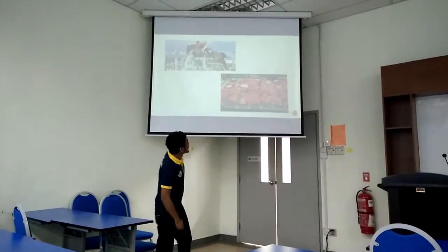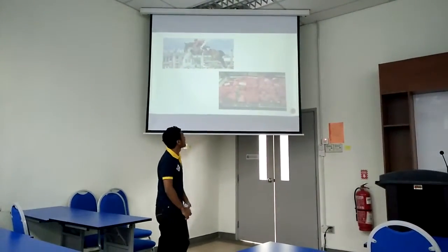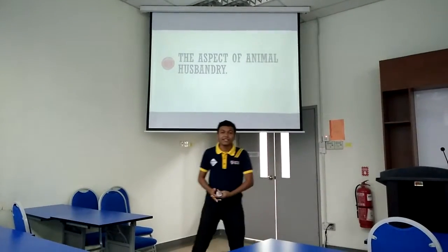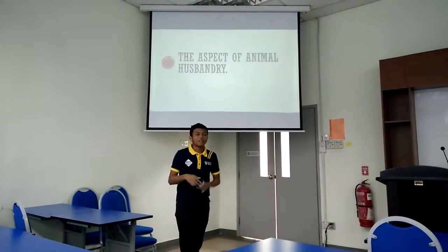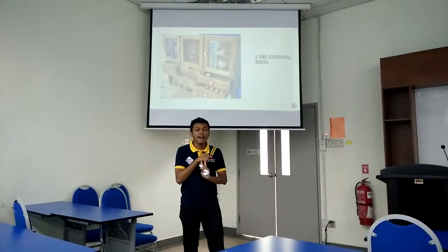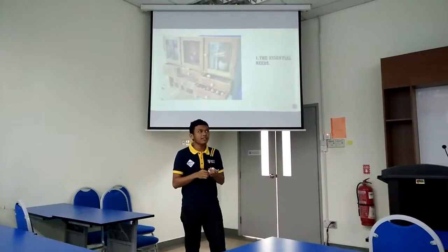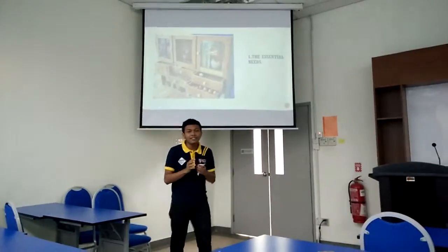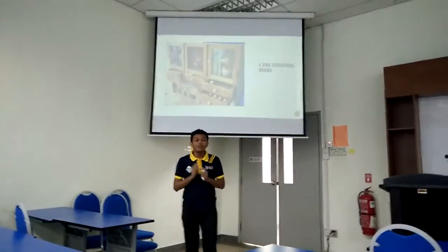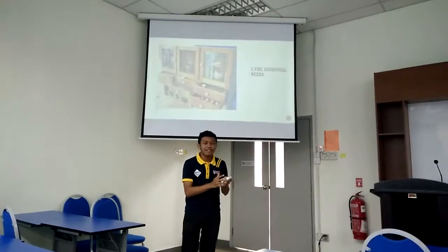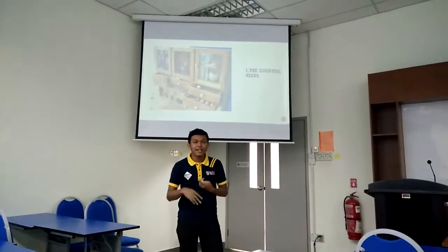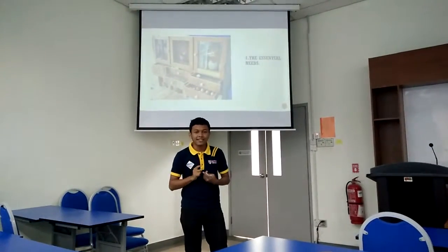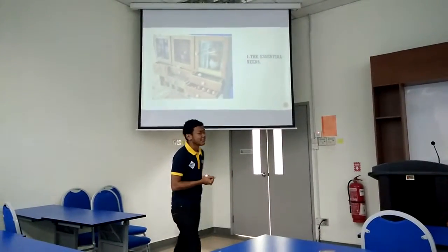The aspects of animal husbandry — there are three listed aspects: essential need, health need, and breeding technique. The essential need is all about providing a good shelter for your farm animals, providing high nutrient food, and lastly, giving clean water to your animals.